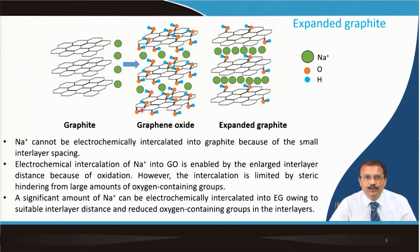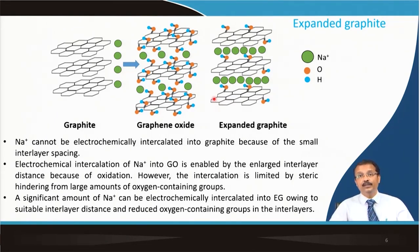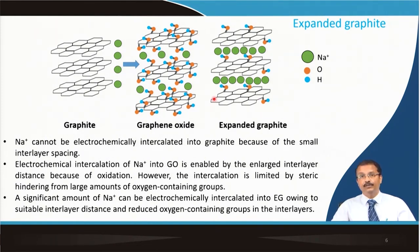To address the steric hindrance, the graphene oxide is further reduced. Once reduced, many oxygen-containing groups are removed, and a significant amount of sodium can be intercalated into this expanded graphite. The electronic conductivity also increases upon reduction. Expanded graphite — which is essentially reduced graphene oxide — with suitable interlayer distance and reduced oxygen-containing groups can be used as negative electrode material for sodium ion batteries.